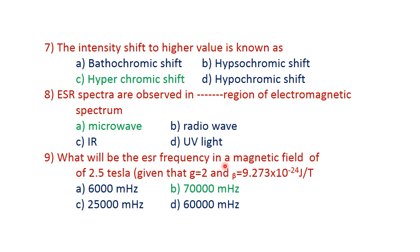What will be the ESR frequency in a magnetic field of 2.5 tesla? Given that g equals 2 and beta equals 9.273 × 10⁻²⁴ joules per tesla. The formula is: nu = g·beta·H₀ / h. Substituting g=2, H₀=2.5 tesla, and Planck's constant 6.626 × 10⁻³⁴, the frequency will equal 70,000 MHz.